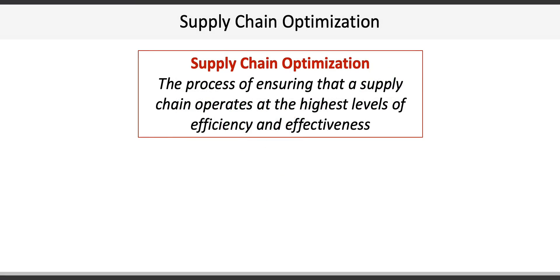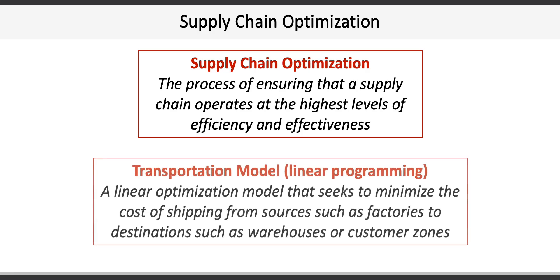The last concept in the chapter relates to supply chain optimization — the process of ensuring that a supply chain operates at the highest levels of efficiency and effectiveness. This involves minimizing costs of manufacturing and transportation, including sourcing, distribution, and placement of inventory throughout the chain. A common tool is the transportation model, a form of linear programming that seeks to minimize the cost of shipping from sources such as factories to destinations such as warehouses or customer zones. We often take for granted that goods are available in stores, but they go through complex global supply chains that are carefully designed and constantly monitored for cost, efficiency, and effectiveness.